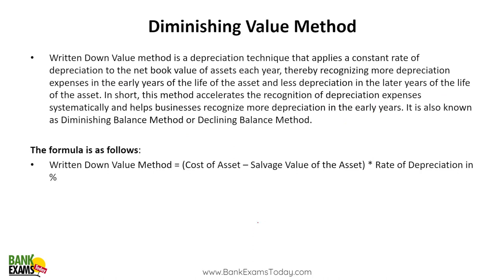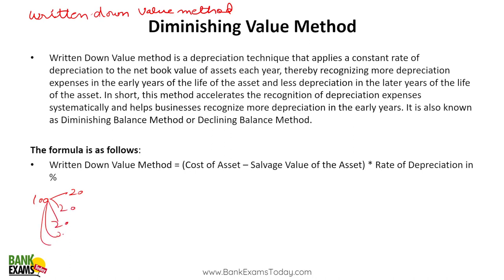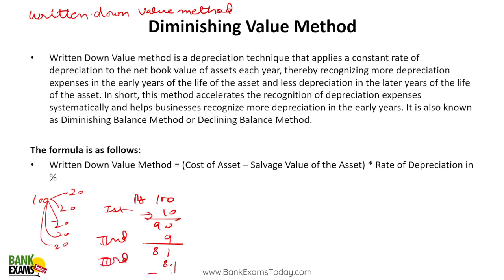The diminishing value method, also known as the written down value method, is the most popular method used in India. In the straight line method, depreciation is fixed each year — say 20 per year on a 100-rupee asset. But in the written down value method, the depreciation rate is applied to the reducing balance. For example, asset value is 100 rupees, depreciation is 10%: year one gives 10 rupees depreciation, leaving 90; year two is 9 rupees, leaving 81; year three is 8.1 rupees. The formula is: cost of asset minus salvage value, multiplied by the rate of depreciation.